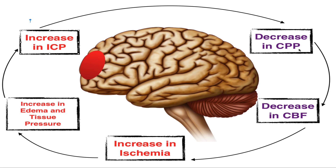In combination with a decrease in cerebral perfusion pressure and cerebral blood flow, we get an increase in ischemia. As that occurs, we also see an increase in edema and tissue pressure. The cycle continues as intracranial pressure increases more, starting the cycle again and again.